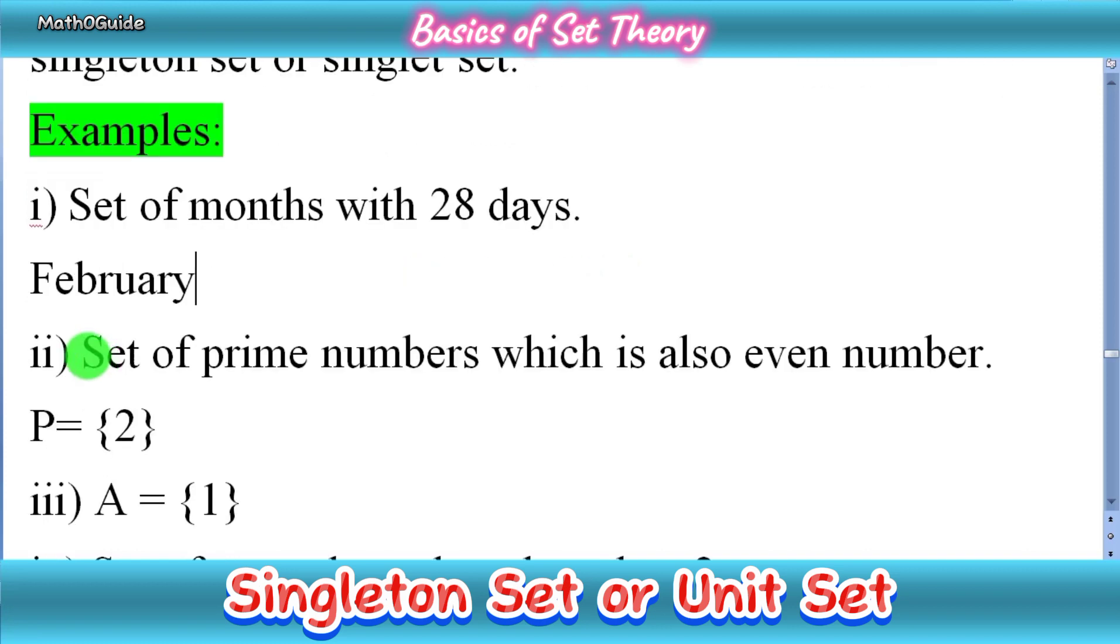Another example: the set of prime numbers which are also even numbers. We have only one number that is both a prime number and an even number, which is two. So this is also a singleton set.